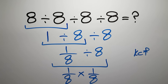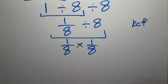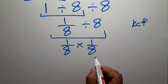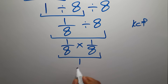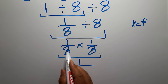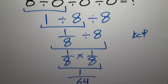So we have 1 over 8 times 1 over 8. 1 times 1 gives us 1, over 8 times 8 which equals 64. And this is our final answer: 1 over 64.